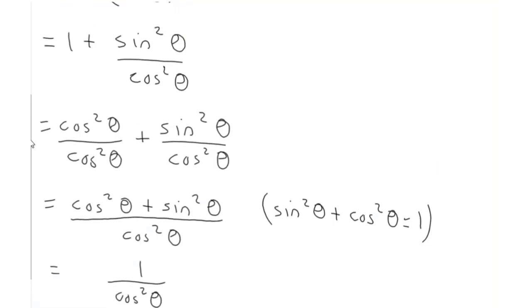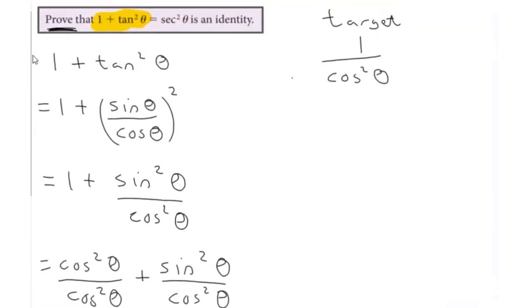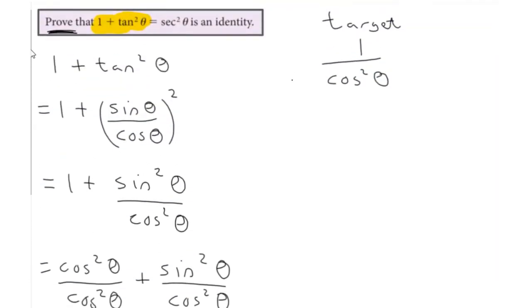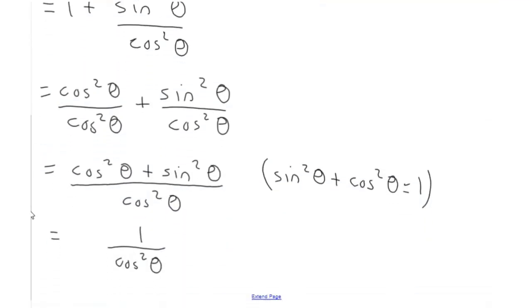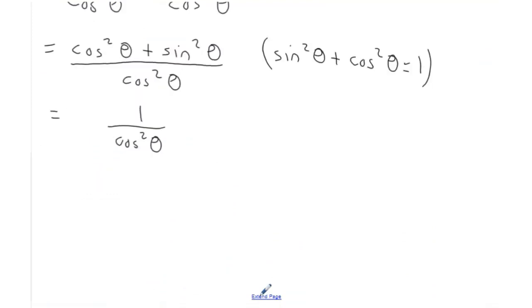So just remembering what the target is, we want it to be one over cos squared theta. We are there, but we should probably show that we know that this is sec squared theta. So just finish it off. Equals sec squared theta as required.